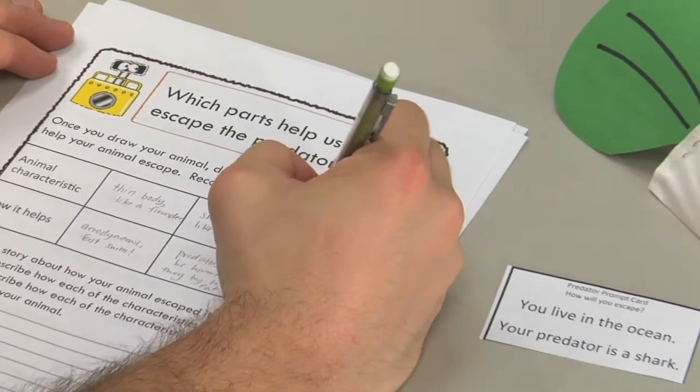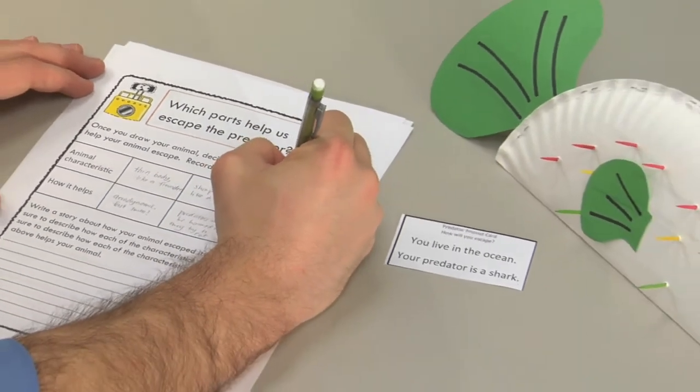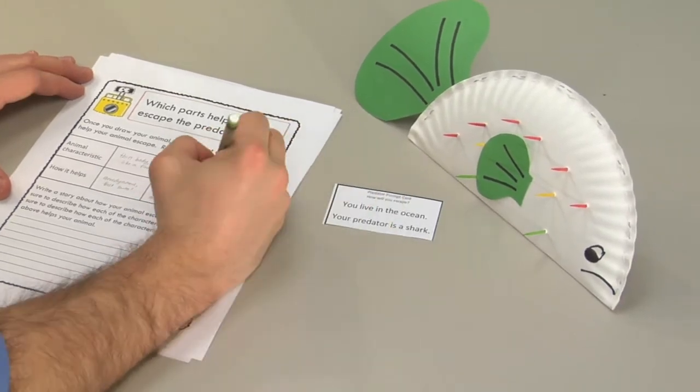In the student journal, record three adaptations that help to increase the prey's chances of survival.